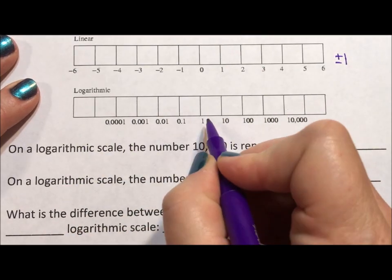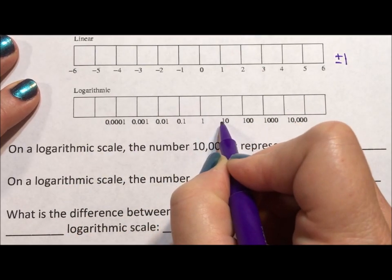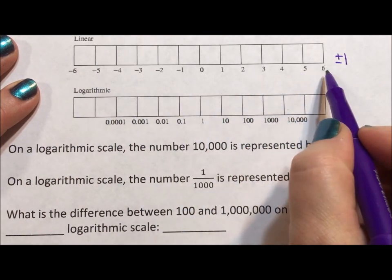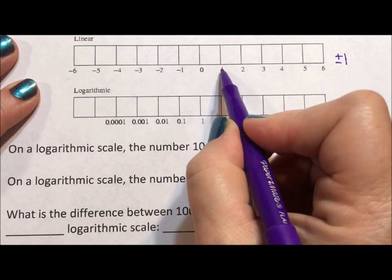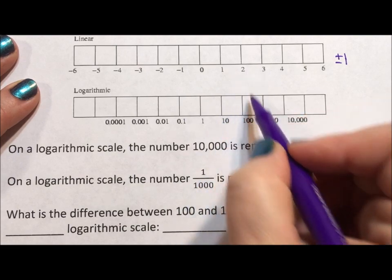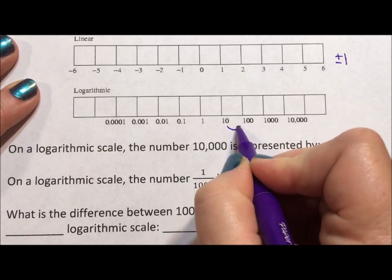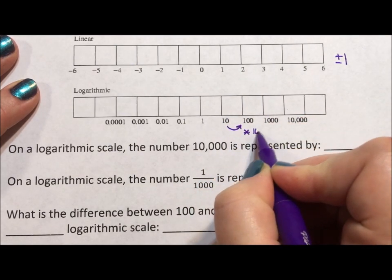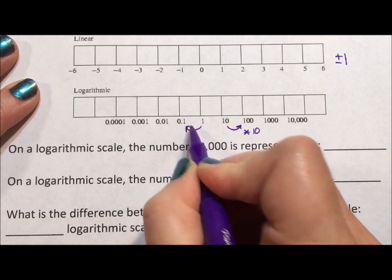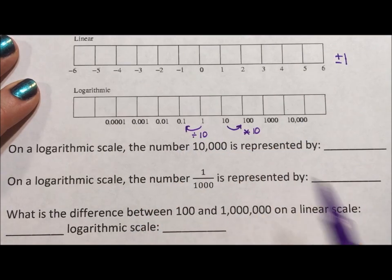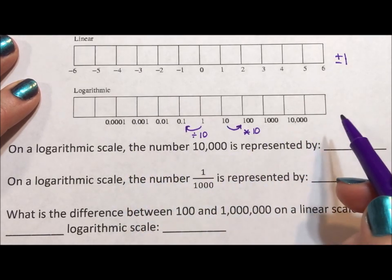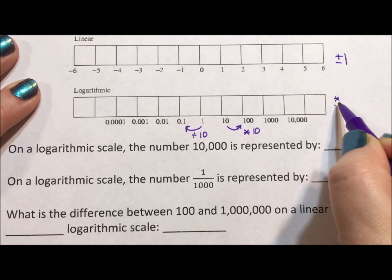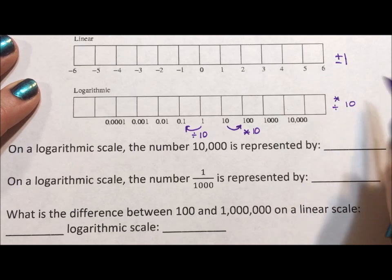For a logarithmic scale, we're thinking about these numbers here being exponents on 10. 10 to the power of 0 is 1. 10 to the power of 1 is 10. 10 squared is 100, which means to move up, we multiply by 10, and to move down, we divide by 10. So this is a logarithmic scale. Its tick marks are based on multiplication, multiplying or dividing by 10 versus adding or subtracting 1.